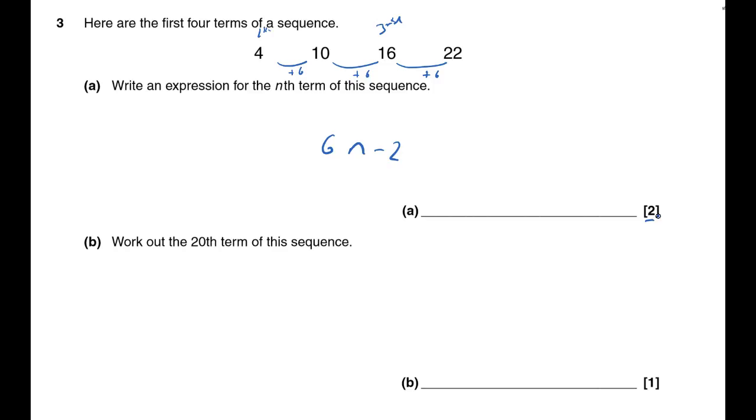Work out the 20th term of the sequence. Well, n will be 20, so 6 times 20 is 120. Take away the 2, that's 118. That's question 3 done.